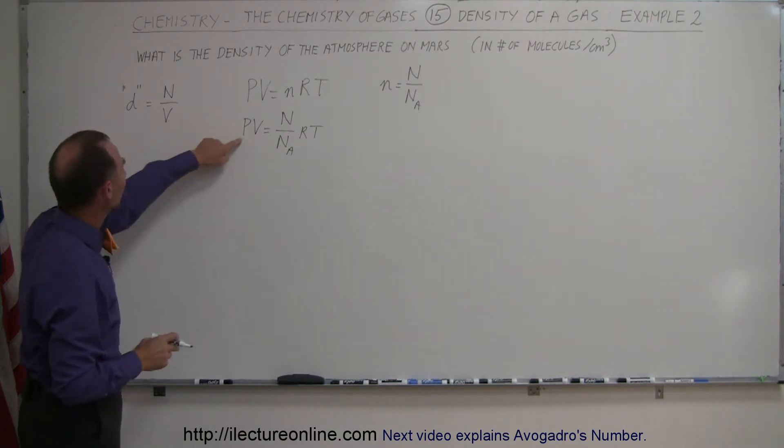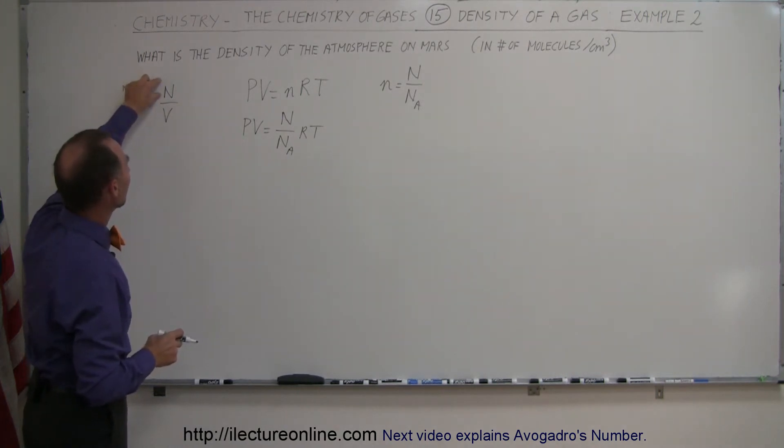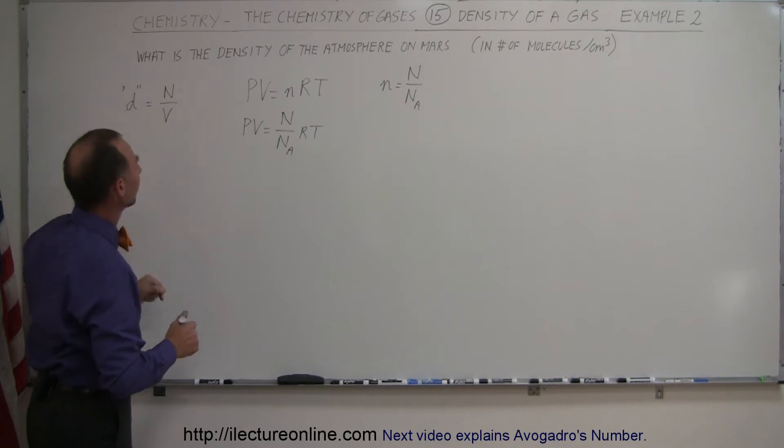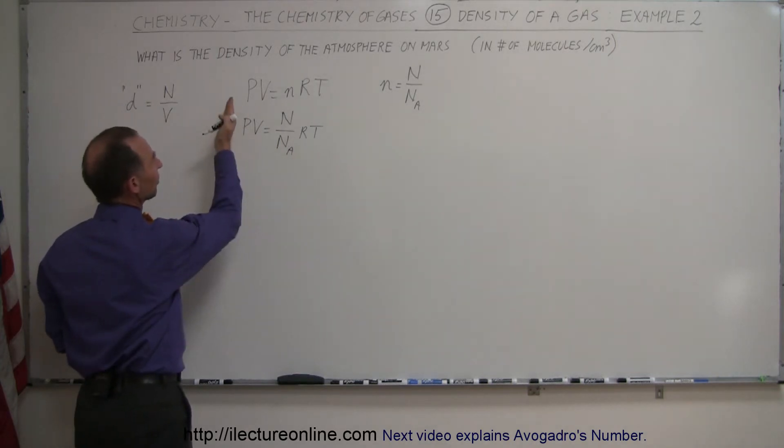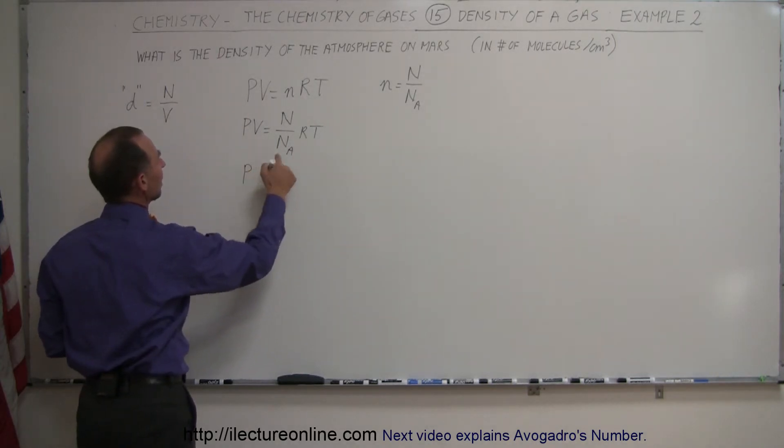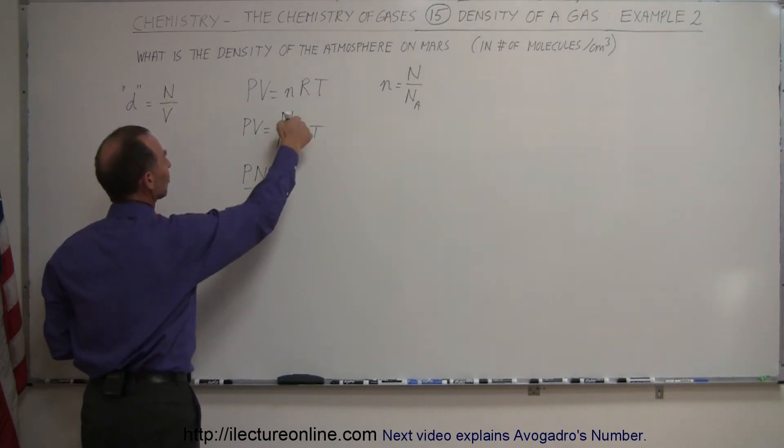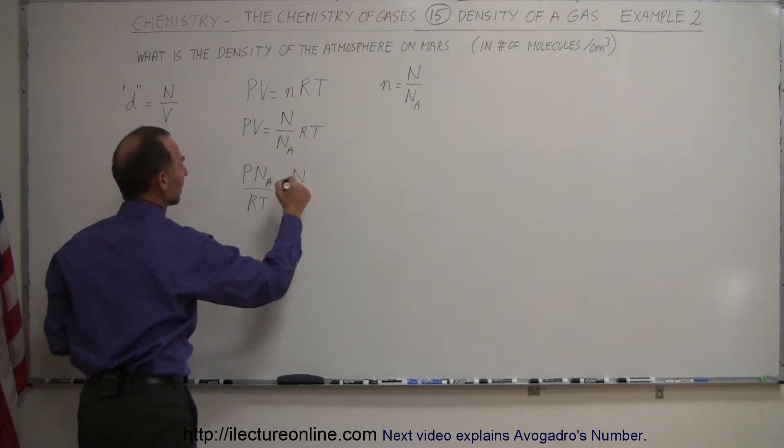Now we have to rearrange this equation in terms of n over V. So we want V down here and everything else on the other side. So we have P, Avogadro's number goes to the numerator, we divide by RT, and on the right side equation we still have the number of molecules and we bring the volume down to the denominator.